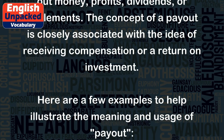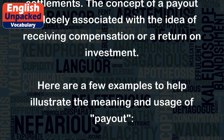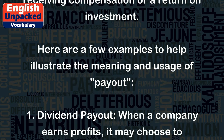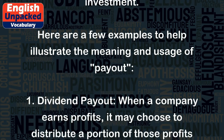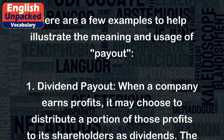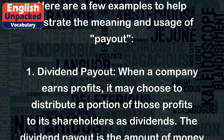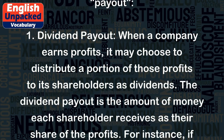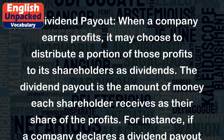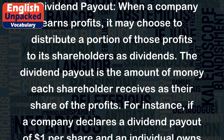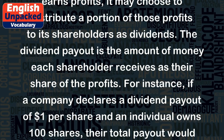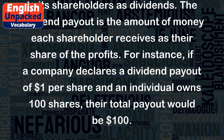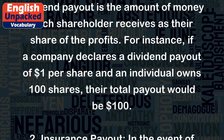Here are a few examples to help illustrate the meaning and usage of payout. 1. Dividend Payout: When a company earns profits, it may choose to distribute a portion of those profits to its shareholders as dividends. The dividend payout is the amount of money each shareholder receives as their share of the profits. For instance, if a company declares a dividend payout of $1 per share and an individual owns 100 shares, their total payout would be $100.